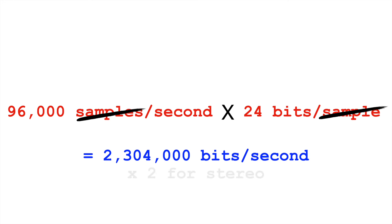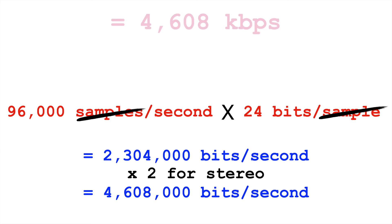We talked about higher sample rates last time, 96 kHz, and we talked about higher bit depths, 24 bits. 96 kHz times 24 bits, 2,304,000 times 2 for stereo, 4,608,000 bits per second. So the bit rate of this high quality audio would be 4,608 kbps.